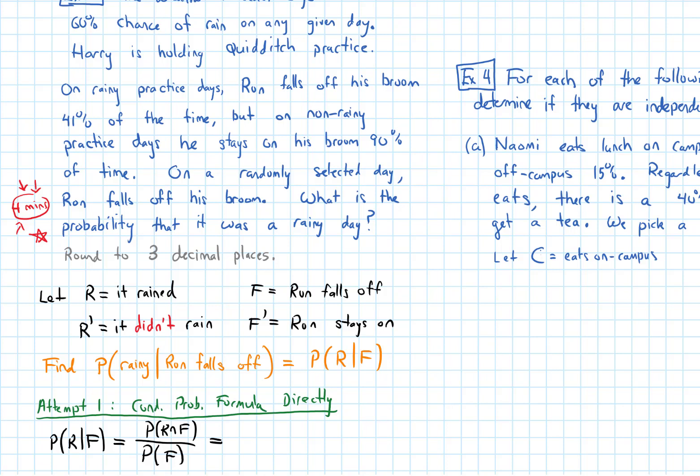To find on the top the probability that it rained and that Ron falls off, the problem tells me there's a 60% chance that it rains. On rainy practice days, Ron will fall off his broom 41% of the time. So I would multiply that 0.6 by 0.41 to get the probability in the numerator.